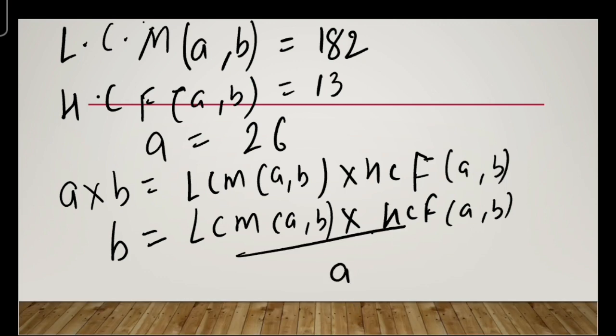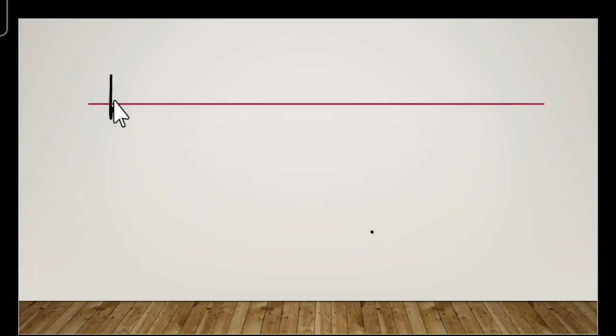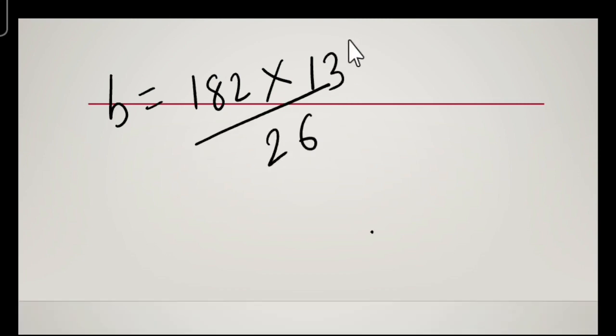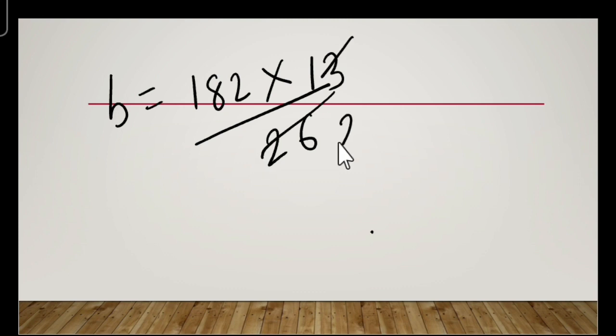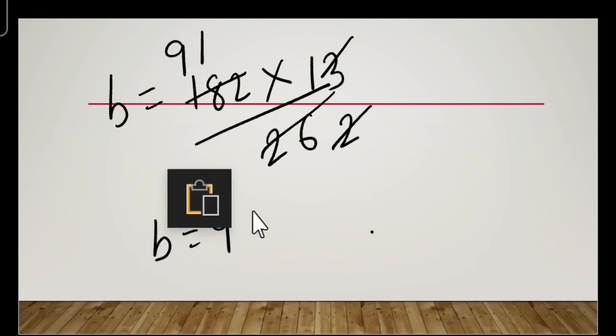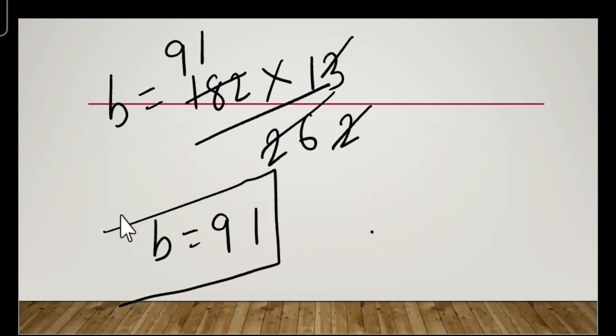So b = 182 × 13 ÷ 26. Simplifying, 26 cancels with 13, giving us 91. So the other number is 91. The first number is 26 and the second number is 91.